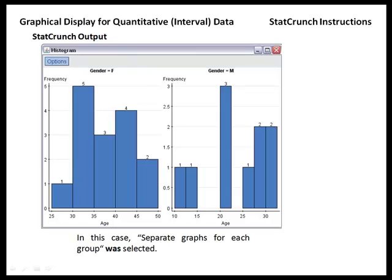If we had checked separate graphs for each group, we'll get one histogram that gives us the distribution of ages for female customers on the left, and we get another histogram for the distribution of male customers on the right.